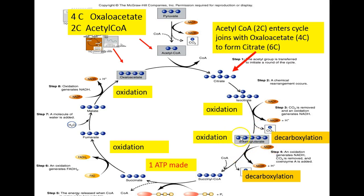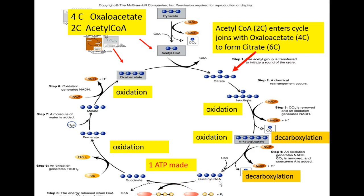Alpha-ketoglutarate is an important precursor metabolite in the formation of many amino acids. In the Krebs cycle, however, alpha-ketoglutarate is oxidized and decarboxylated to produce a four-carbon compound called succinyl coenzyme A. So far, we have taken six-carbon citrate — formed by joining oxaloacetate, a four-carbon compound, and acetyl coenzyme A, a two-carbon compound — and citrate has been oxidized twice and decarboxylated twice to produce succinyl coenzyme A.